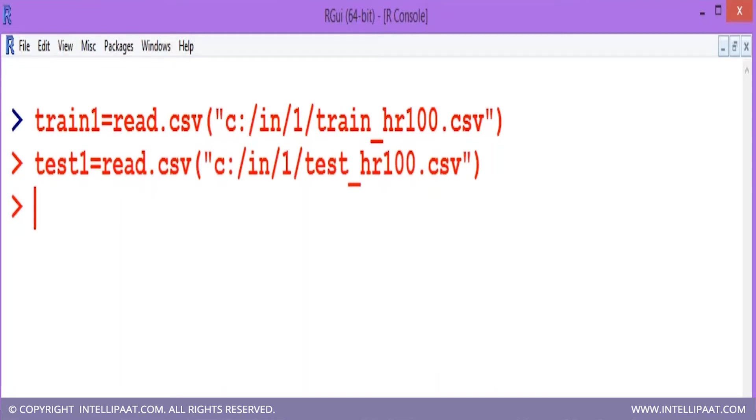Once the training and testing data is here, I can check how many columns and rows are here. So nrow of training1. I can see here, I have around 10,000 rows.